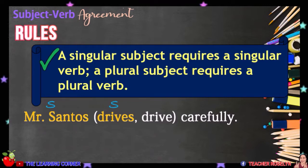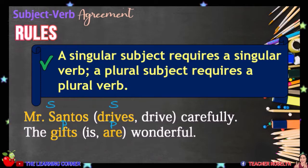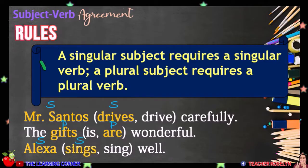Another example. In this sentence, our subject is the word GIFTS, which is plural. For this, we will use the linking verb ARE. The gifts are wonderful. Another example: our subject is Alexa, which is singular. The verb that we are going to use is SINGS. Alexa sings well.